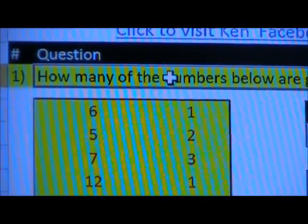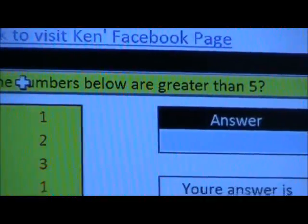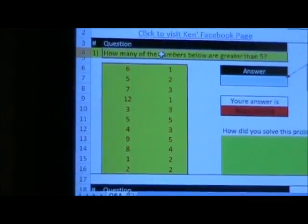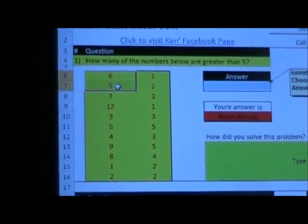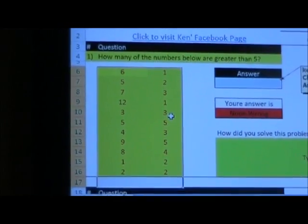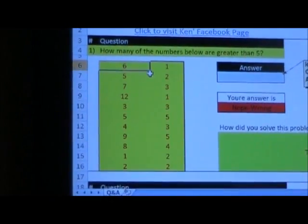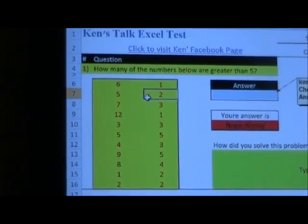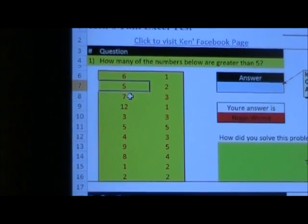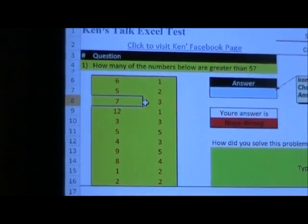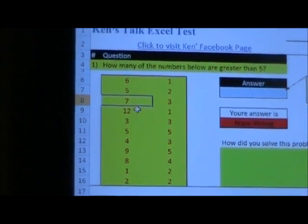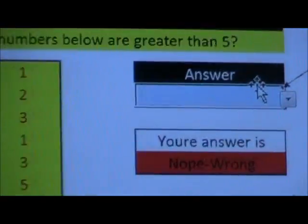Basically, this says, how many of the numbers below are greater than five? And when I say the numbers below, I'm talking about all these numbers right here. Six is greater than five, one is not greater than five, two is not, five is not greater than five because it is five, seven is greater than five. How many of these are? You can tell that you can fill this out.